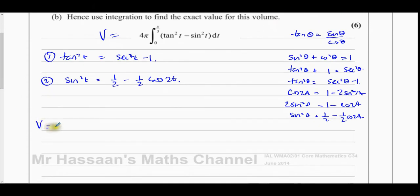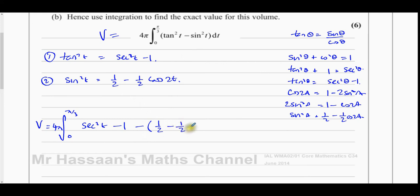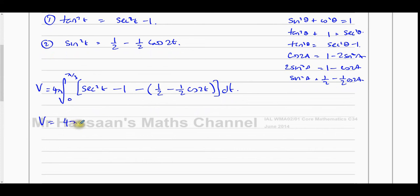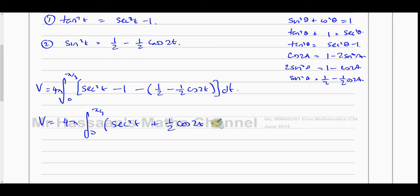Putting it all together, the volume equals 4π times the integral from 0 to π/3 of [sec²t − 1 − (½ − ½cos(2t))] dt. Simplifying: that's sec²t + ½cos(2t) − 3/2, all integrated with respect to t. Now everything is in a form I can integrate.